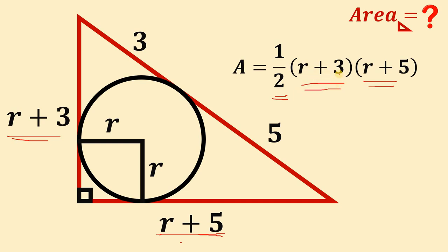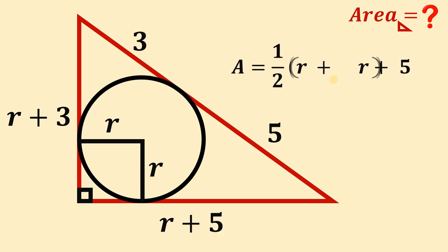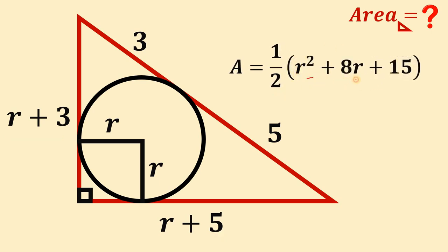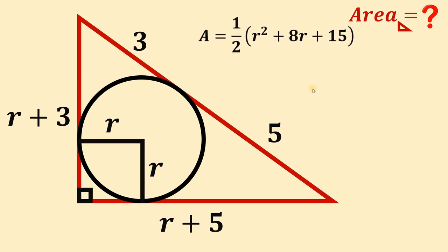Let's simplify. Expanding (R plus 3) times (R plus 5) gives us R squared plus 8R plus 15. So the area of this right triangle equals one-half multiplied by (R squared plus 8R plus 15).